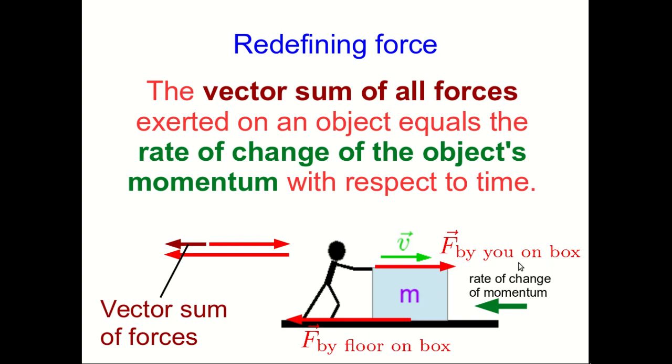What this shows us is that our definition of force as the rate of change of the object's momentum isn't quite good enough. It's fine when we have a situation where there's only one force acting on the object that matters. But as soon as there's more than one, we need the vector sum of the forces, not just one force. And so our definition is that the vector sum of all the forces exerted on an object equals the rate of change of the object's momentum with respect to time.